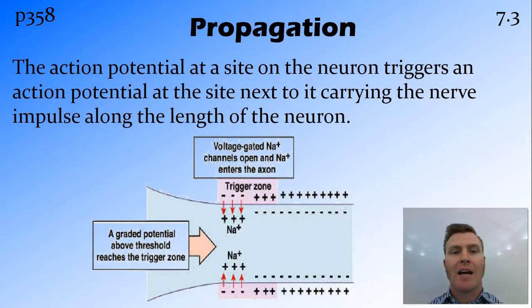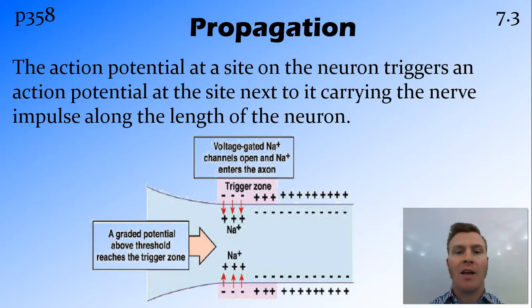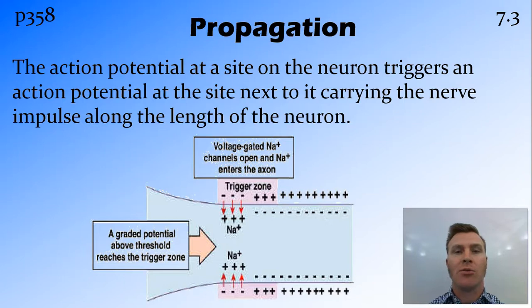The way that the action potential is propagated along the surface of a neuron is a bit like a chain reaction. One site is stimulated and causes an action potential, and that action potential stimulates the site next to it, causing an action potential there. So it moves like a wave along the length of the neuron.